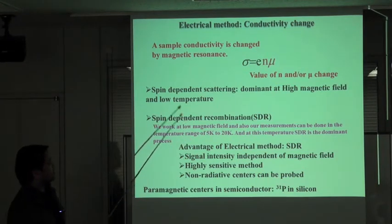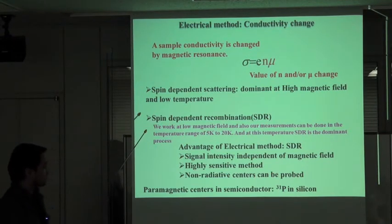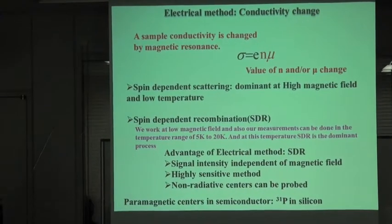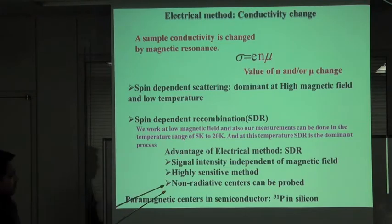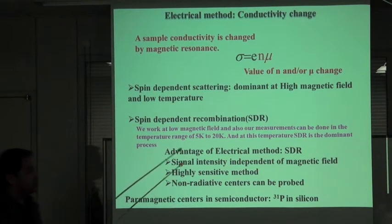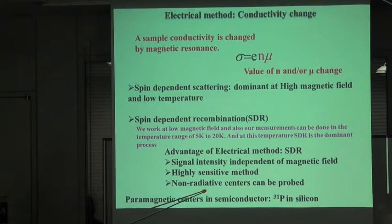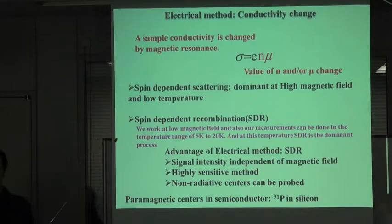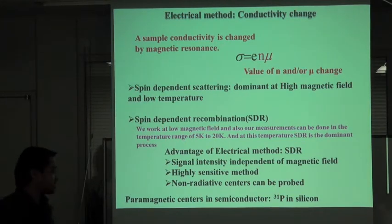A few advantages of this electrical method compared to conventional ESR for detecting paramagnetic centers: the signal intensity does not depend upon the magnetic field, which allows working at very low magnetic field. These methods are also very highly sensitive—you can probe a very small number of spins. You can also probe non-radiative centers, unlike optical detection methods which require the centers to be radiative.